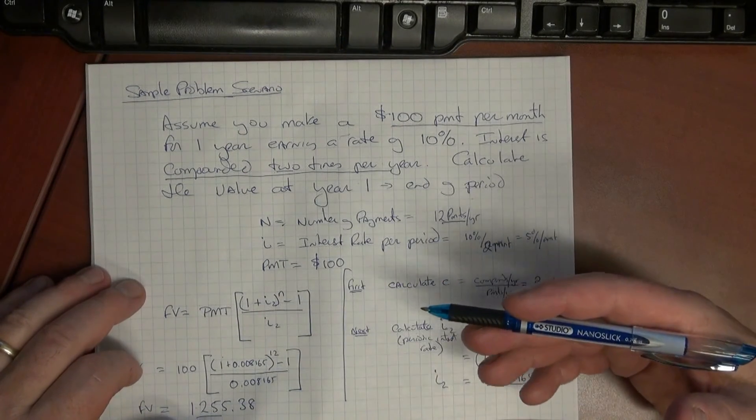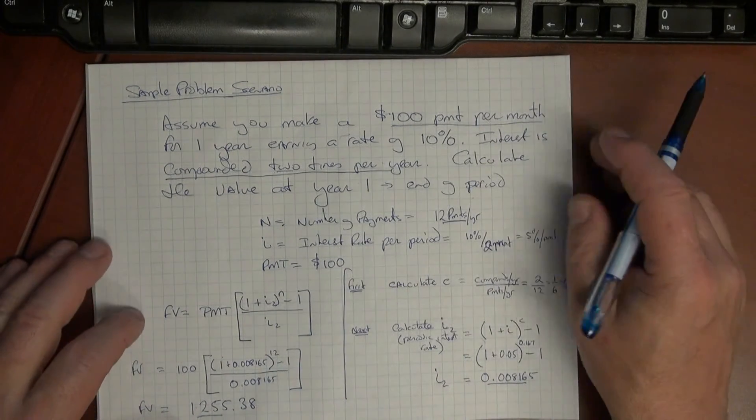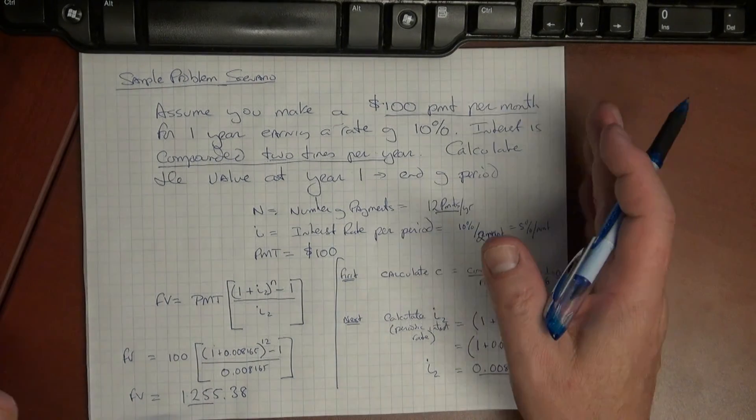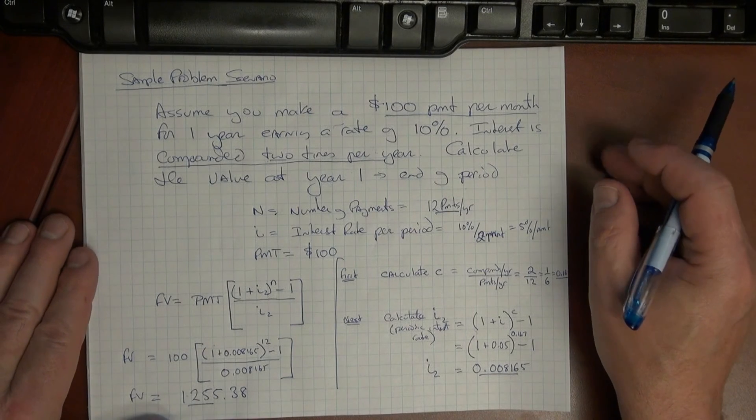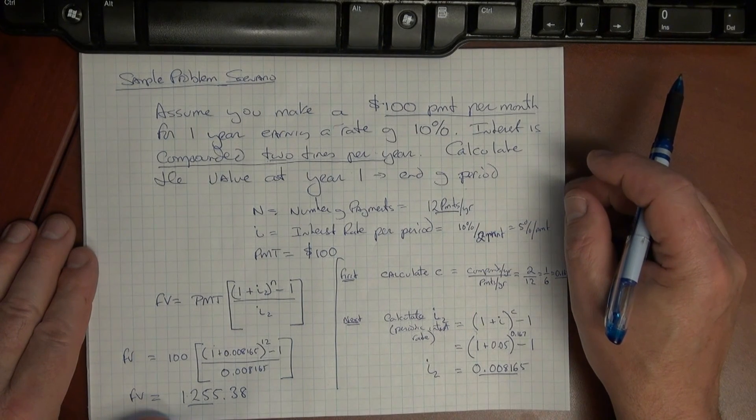So that's generally the process that we're going to go through. I'm going to do some examples next and we'll be doing both future value and present value in these examples and covering both of that off. Remember if you have any questions please let me know. Thanks.